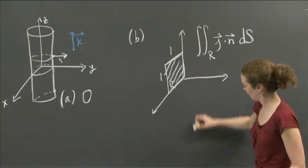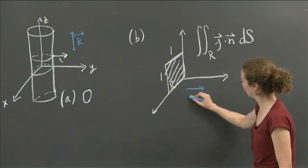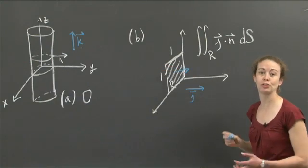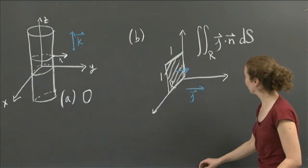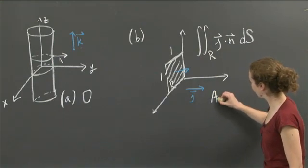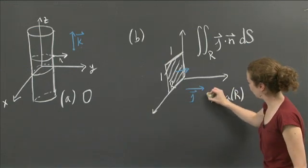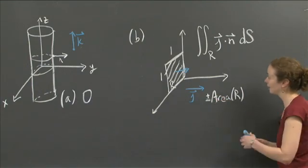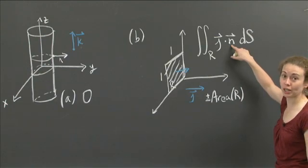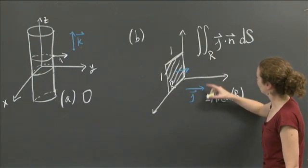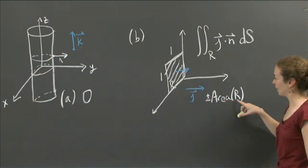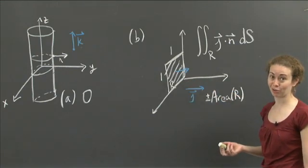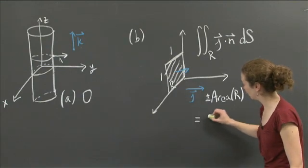And hopefully that makes sense, because j, let me draw this, j is pointing exactly in the y direction, right? And the normal is either in this direction or in the opposite direction, up to how I choose to orient the surface. And so j dotted with n is either plus or minus 1. And so I just get the area of R with a plus or minus in front, depending on whether j dotted with n is 1 or whether j dotted with n is minus 1. So the solution for this computation is just the area of R or minus the area of R. Well, what's the area of the region? The area, it's a square of side length 1, so it has area 1. So the final answer is just plus or minus 1.